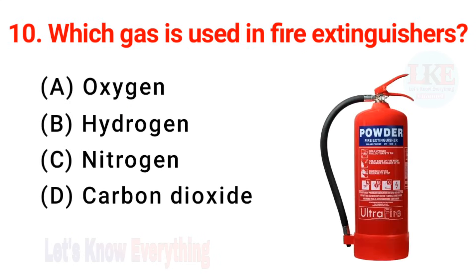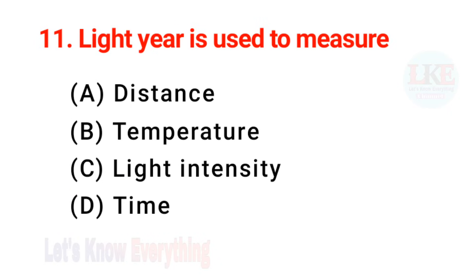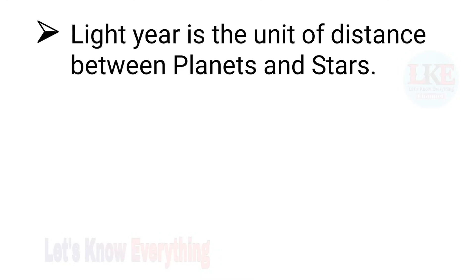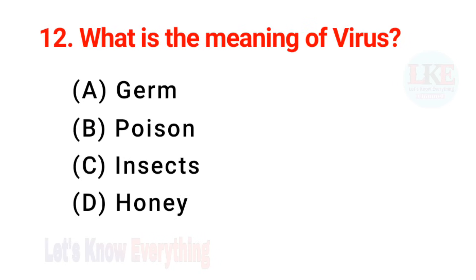Question number 10: which gas is used in fire extinguishers? Very important question. Right answer option D — carbon dioxide. Question number 11: light year is used to measure distance. Light year is the unit of distance between planets and stars. Question number 12: what is the meaning of virus? Right answer option D — poison.